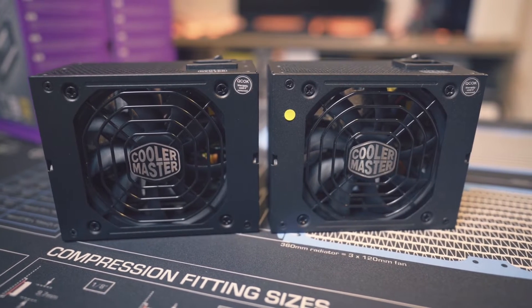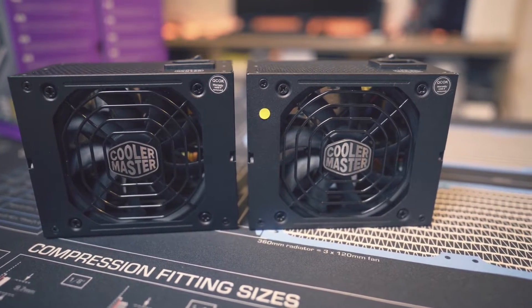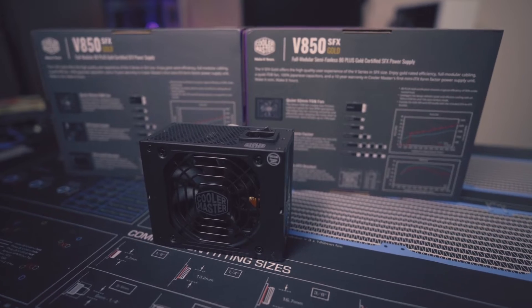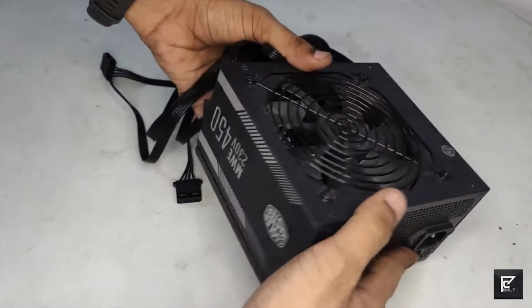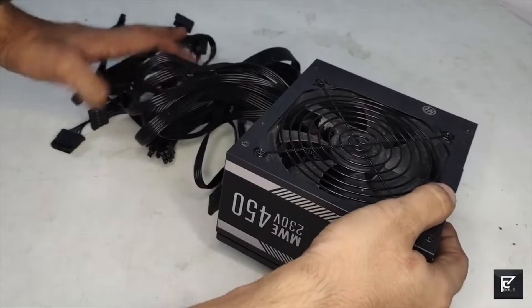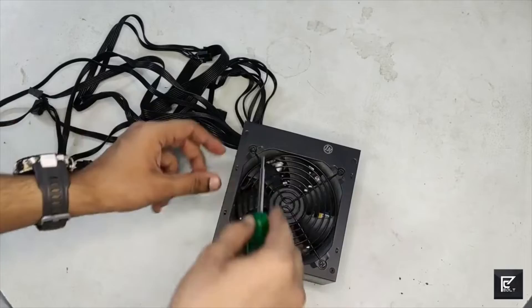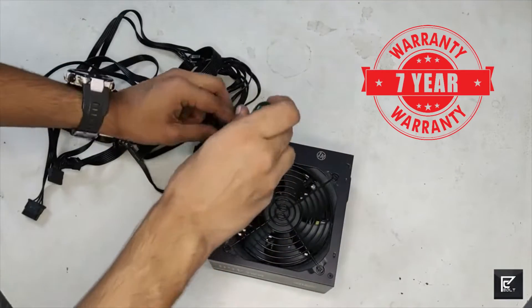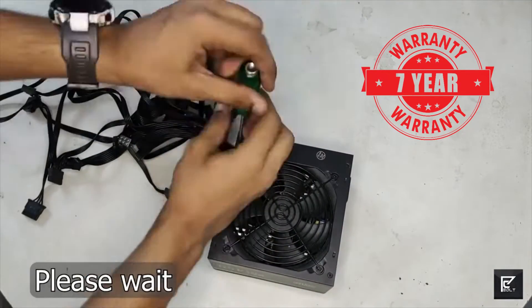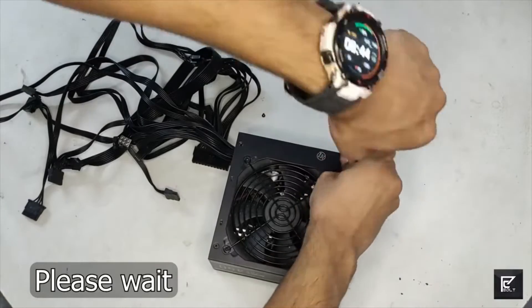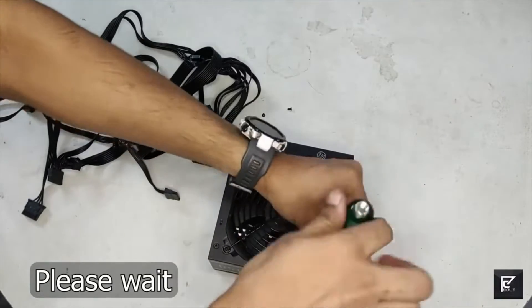CoolerMaster's main focus is to provide more affordable units as opposed to top-tier premium power supplies. This reflects on the warranty, as their PSUs have the shortest coverage periods of any brand featured in this video. The warranty they offer on their top PSUs is only 7 years, which is considerably less compared to the best brands. Plus, many of their other products only have a 2- to 3-year warranty.